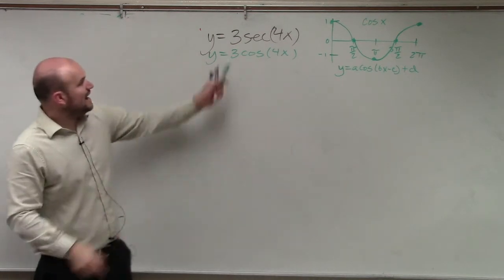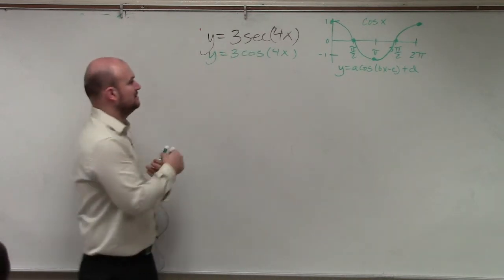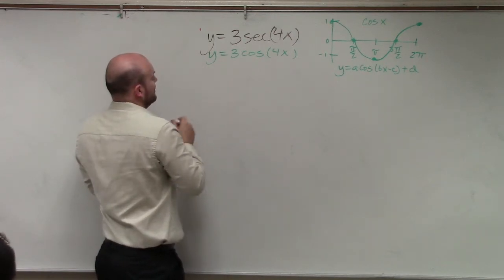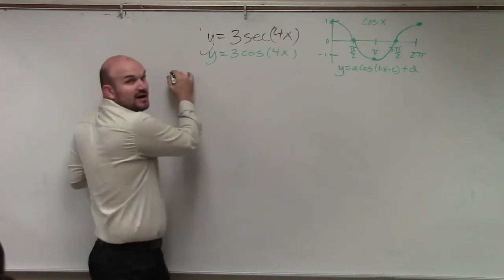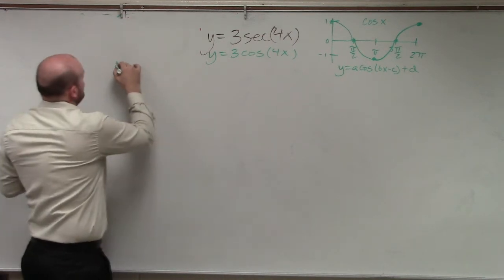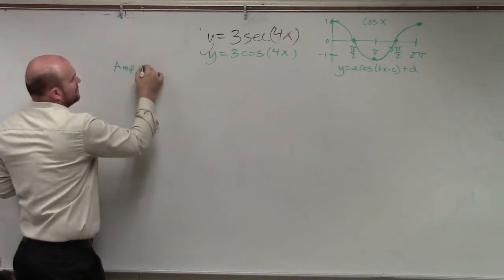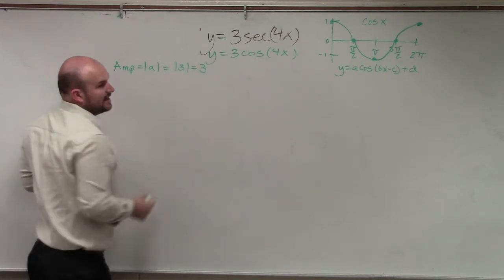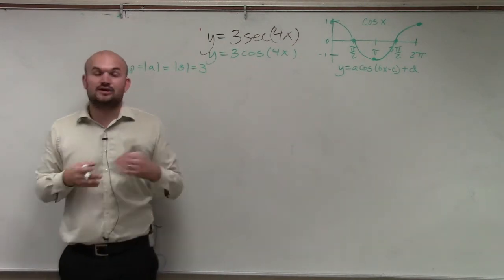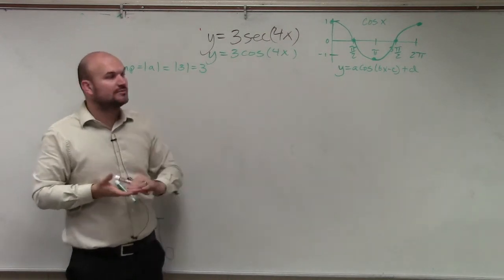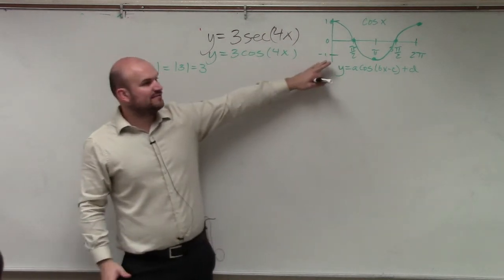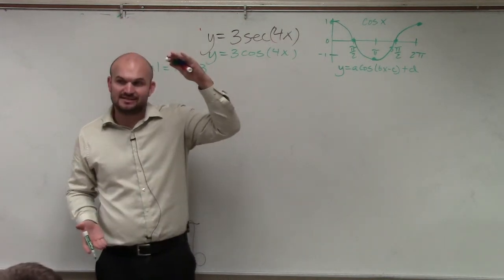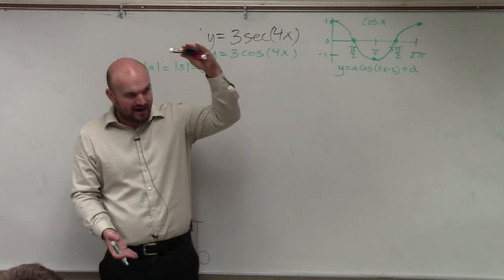So do we have an a? Yes. So here we have the amplitude. First thing you want to figure out is what is the amplitude. So amplitude is equal to the absolute value of a, which in this case is the absolute value of 3, which is 3. The amplitude tells you how high the graph goes or goes below, basically if there's no vertical translation. The better actual description is it's the half distance between the max and the min of the graph.